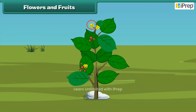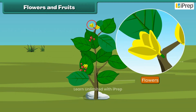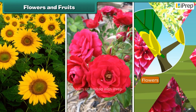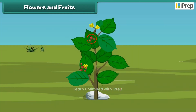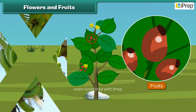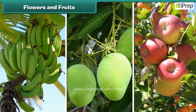Now let us know about the most attractive and beautiful part of the plant — yes, that is the flower. Flowers are of different colors and types, like sunflower, rose, and dahlia. Fruit is the juicy part of the plant and comes in different shapes, sizes, and colors, like banana, mango, apple, and oranges.